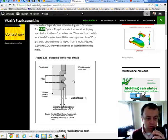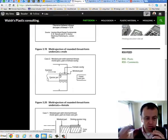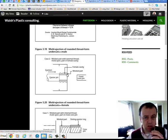This is so that during ejection, the part is able to collapse into itself and roll over the threads.